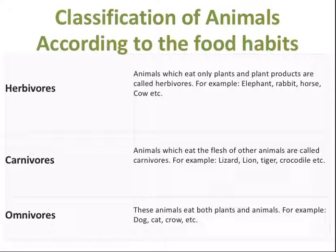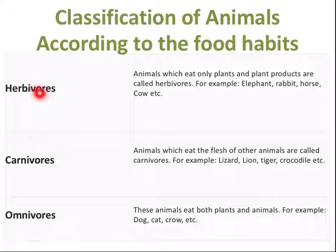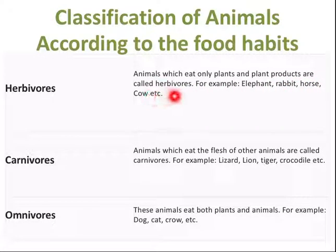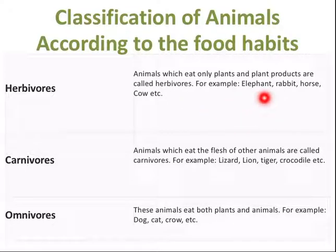Different animals eat different kinds of food and their body parts are adapted to that kind of food. We classify animals according to food habits into three parts: herbivores, carnivores, and omnivores. Herbivores are the animals which eat only plants and plant products — for example elephant, rabbit, horse, and cow.